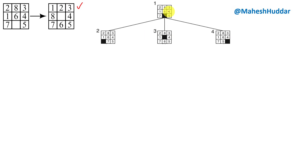In BFS, once we expand the root node, we expand all successors of the root node. We start expanding the first successor. The blank can be moved up or to the right, giving two possibilities. However, moving to the right gives us the initial state again, so that is not suitable — only the upward move is valid here.